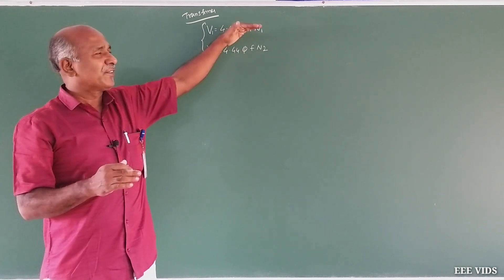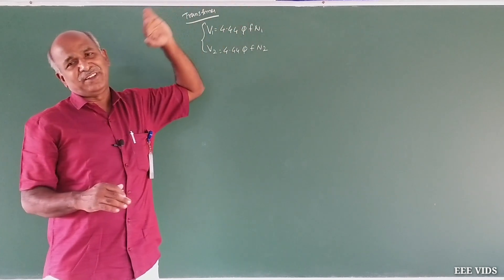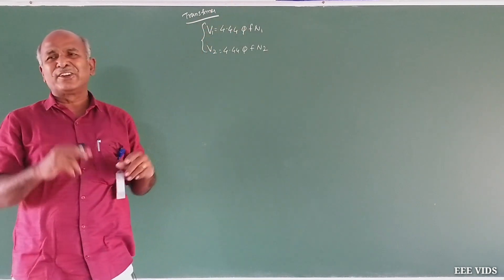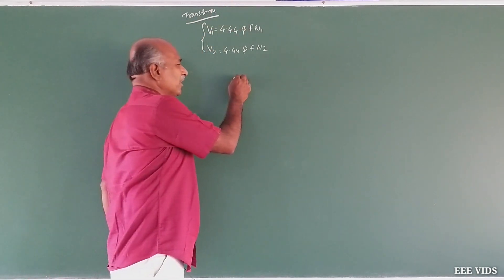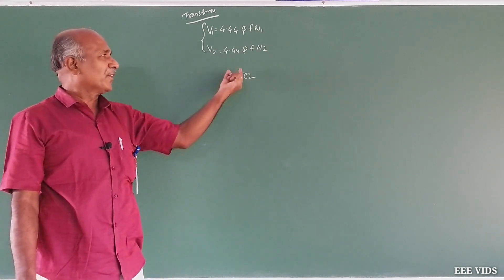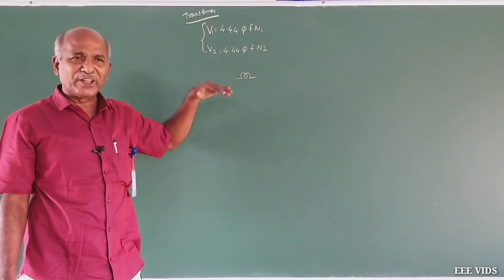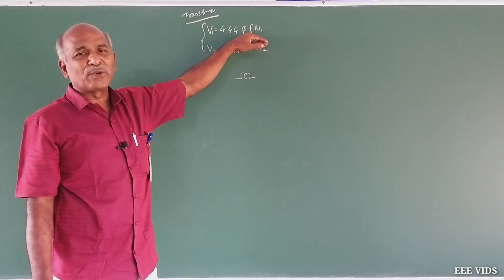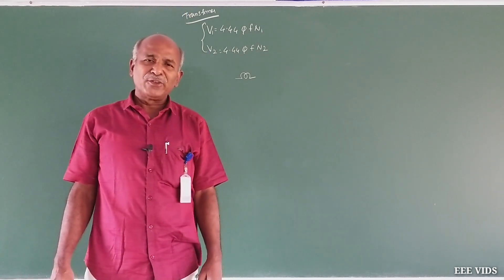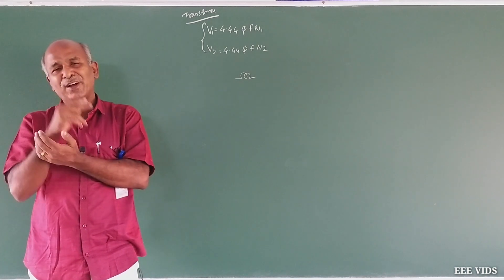Instead, we vary the frequency. By varying the frequency, the number of turns can be reduced — just one or two turns. It is not a large coil. When the number of turns N1 equals 1, the voltage increases. If the voltage increases, we increase the switching frequency, so we use a high-frequency transformer with very few turns.